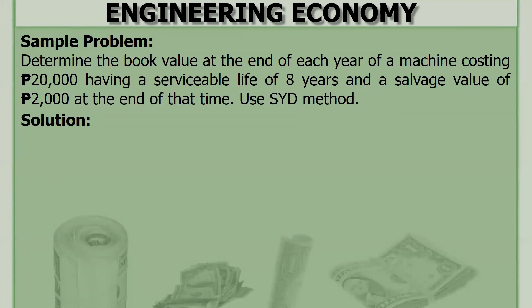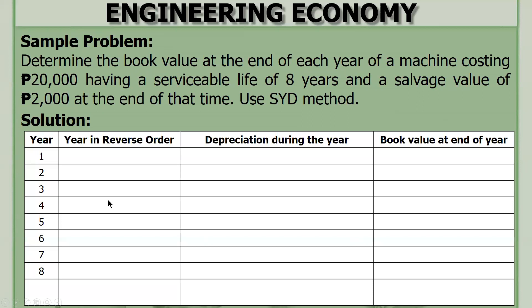For our sample problem: determine the book value at the end of each year of a machine costing 20,000 pesos, having a serviceable life of eight years and a salvage value of 2,000 pesos at the end of eight years. Use the SYD method. Let's construct a table. The life is eight years, so first get the sum of the digits: SYD equals one plus two plus three plus four plus five plus six plus seven plus eight, so the sum is thirty-six.